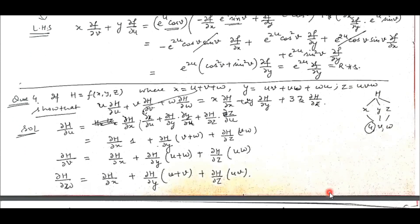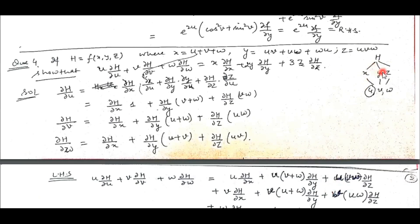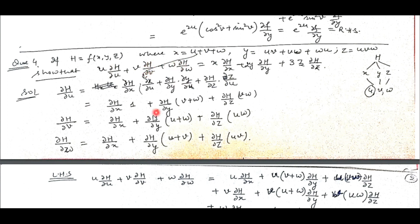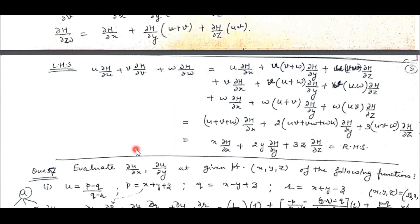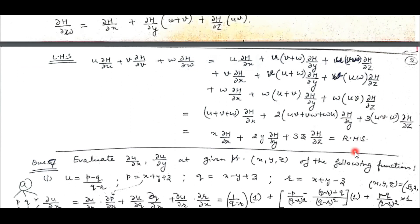Same way, question number 4. Here we have a function of three independent variables, and further these three independent variables are functions of another three independent variables. We have to show that the left-hand side equals the right-hand side. So we find out these derivatives using the chain rule, substitute into the left-hand side, and after simplifying we get it equal to the right-hand side.